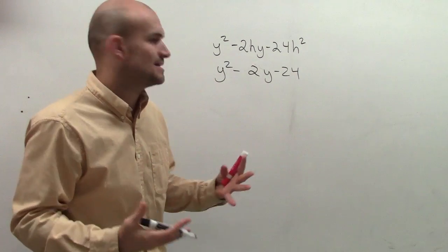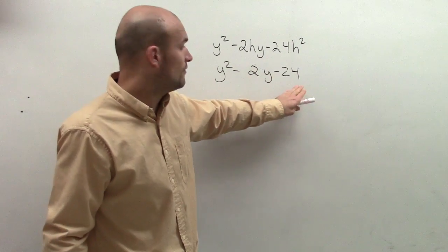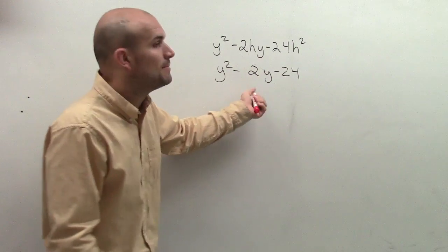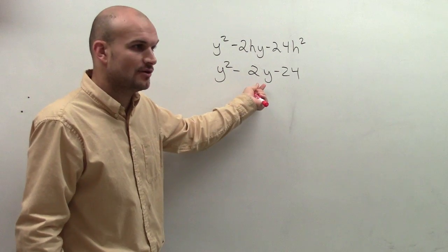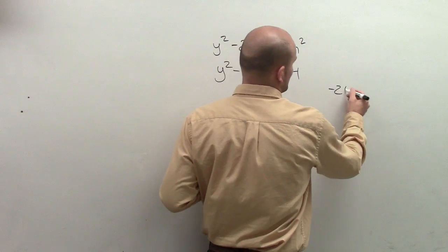Now if we were to factor this, it's kind of the same thing. What you can do is look at your factors of negative 24 and see what two factors are going to add up to give you negative 2. So you can just write down all the factors of negative 24.